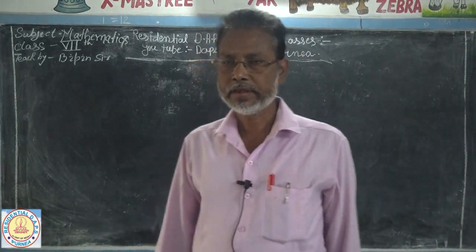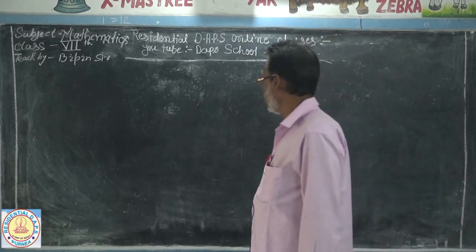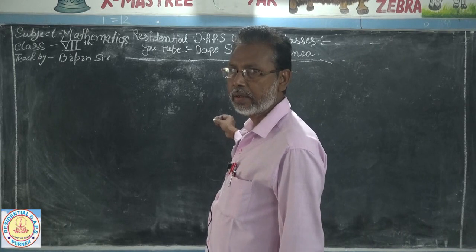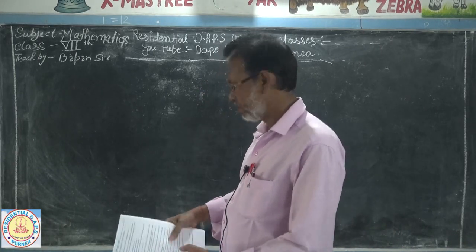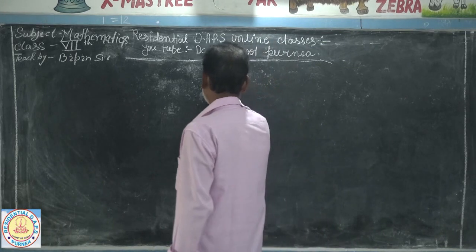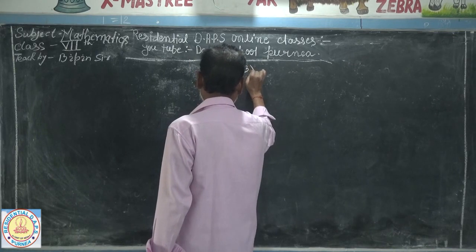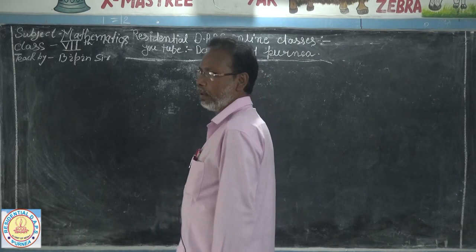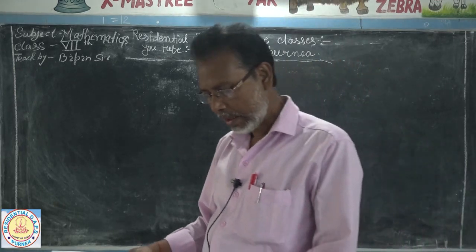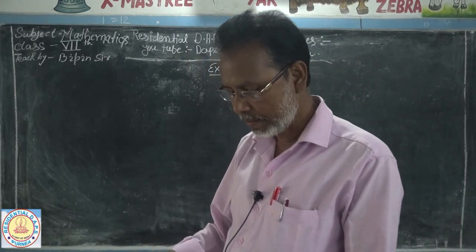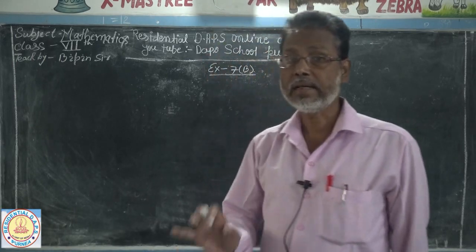Good morning students, today I will teach linear equations, class 7th, exercise 7b. Question number one: twice a number when decreased by 7 gives 45.